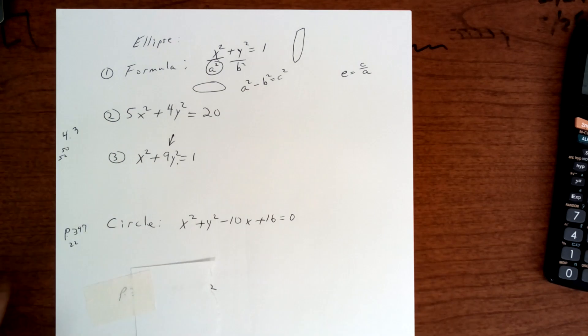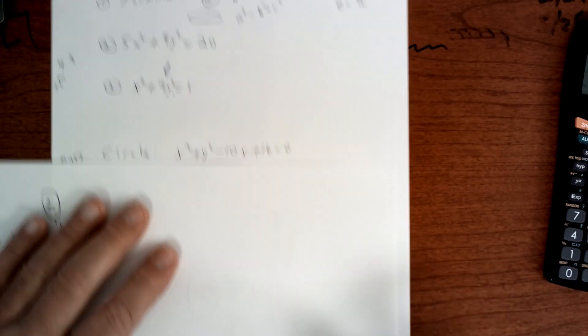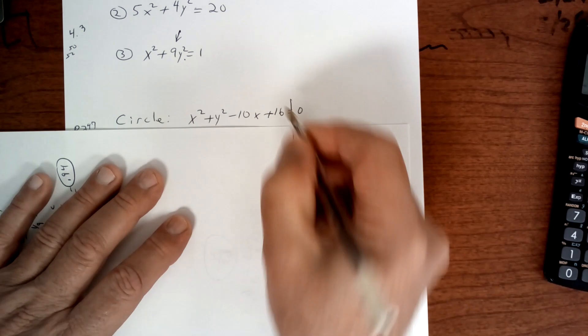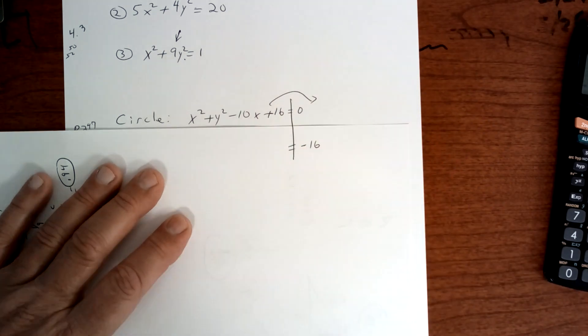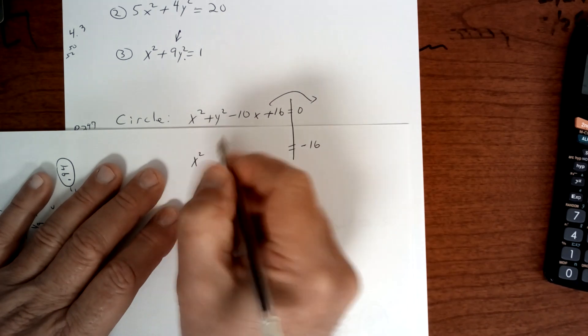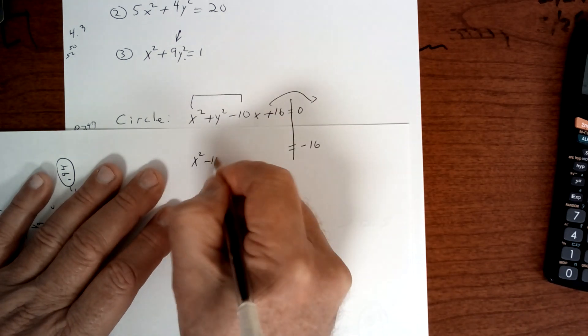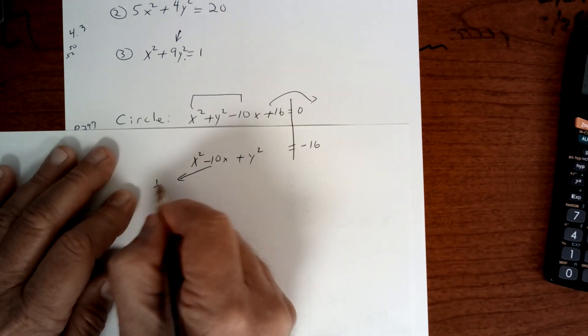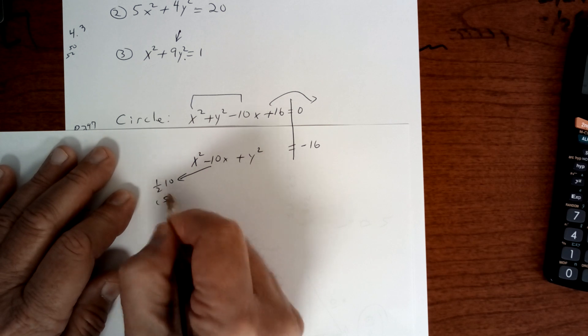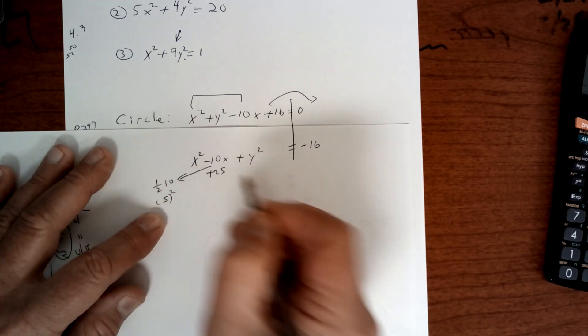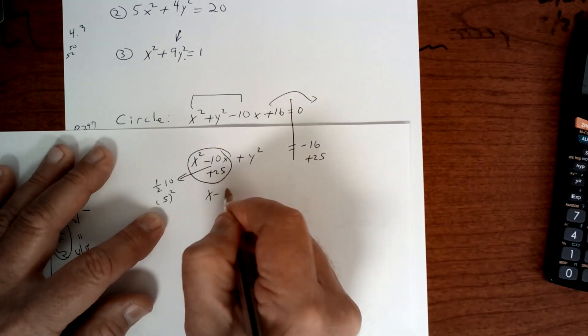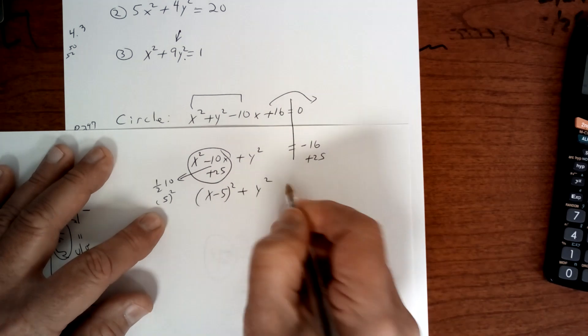So let's try this one, which is a circle. Now, pay attention to this. This is kind of a review here. So what I would do first, if I had to do it, is probably move the 16 to the other side. So I'm going to say negative 16. I'm going to put my x's together. So x squared minus 10x plus y squared. At this point, I'm going to complete the square. So half of 10 is 5, and 5 squared is 25. So I want to add 25 here and add 25 here. When you do that, that becomes x minus 5, and you get this. And whatever that is, is 9.